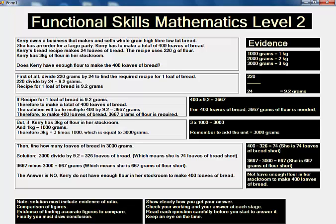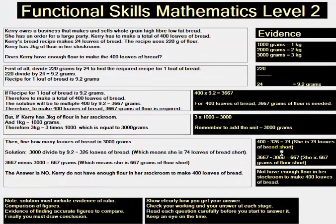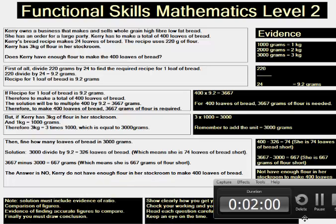Then, find how many loaves of bread in 3000 grams. Solution: 3000 divided by 9.2 equals 326 loaves of bread. 3667 minus 3000 equals 667 grams, which means she is 667 grams of flour short. The answer is no. Carrie does not have enough flour in her stockroom to make 400 loaves of bread.